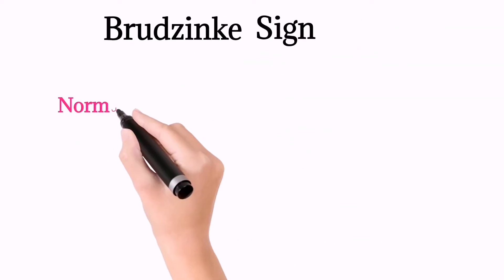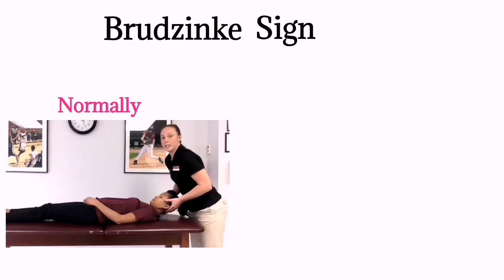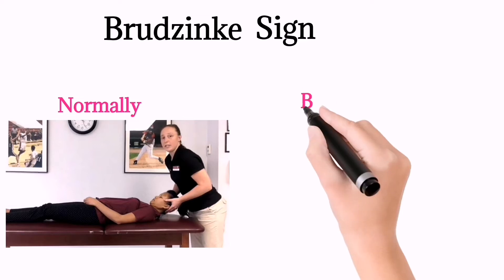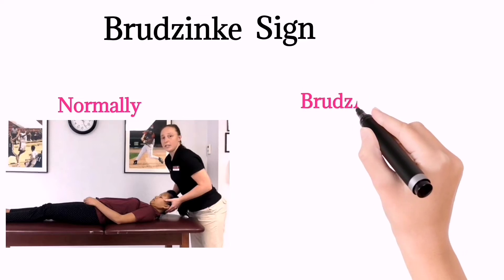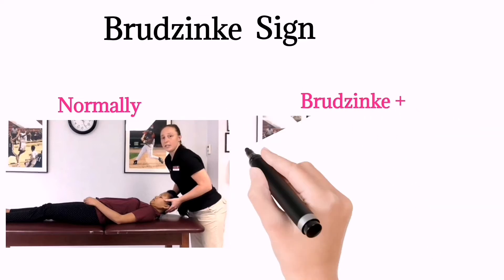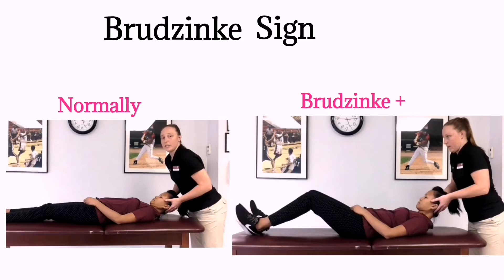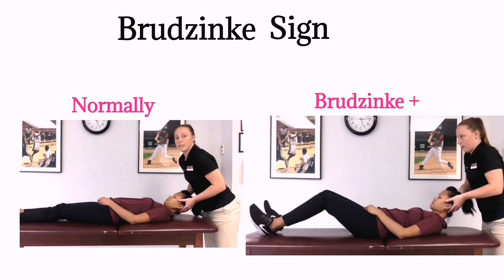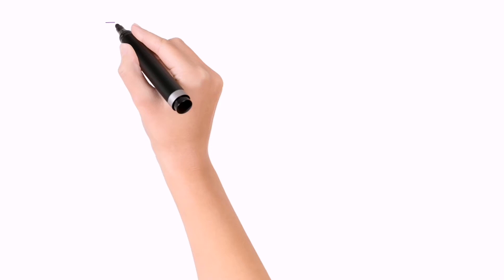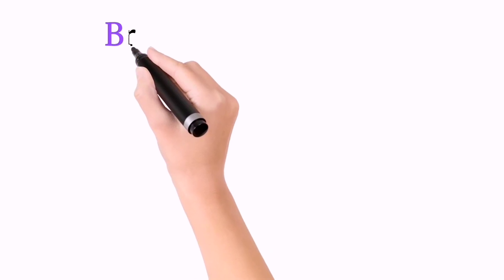Brudzinski sign: normally, neck flexion occurs without flexion of the thigh on the hip — this is a normal or Brudzinski negative sign. In a positive Brudzinski sign, neck flexion leads to flexion of the thigh on the hip.